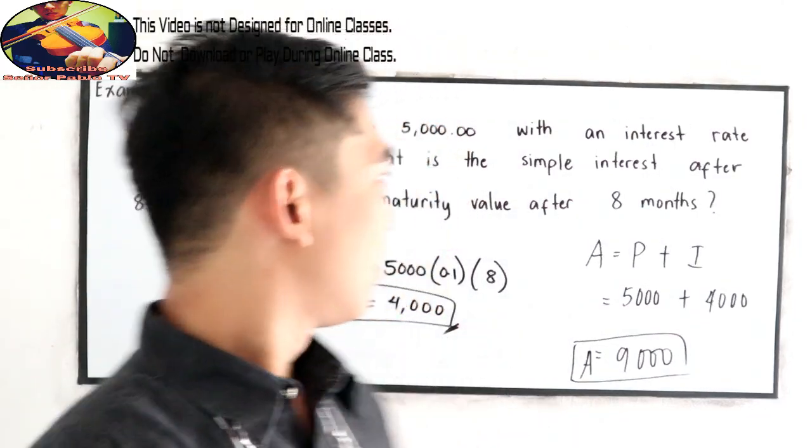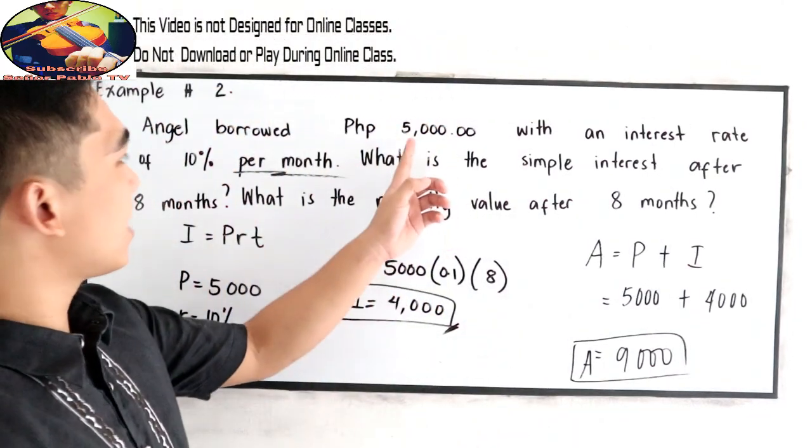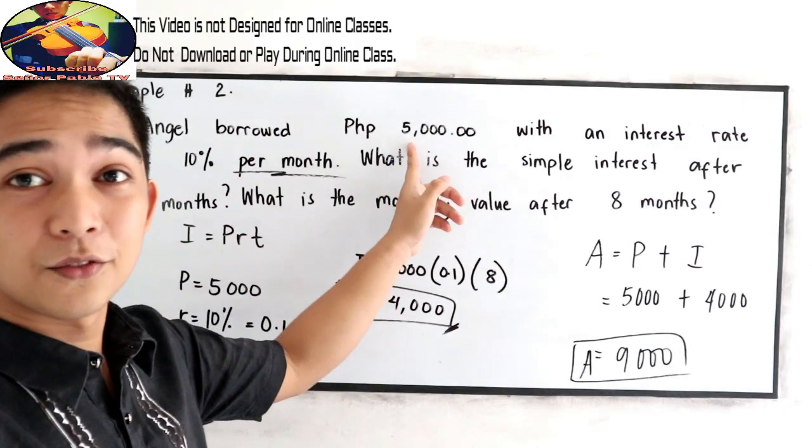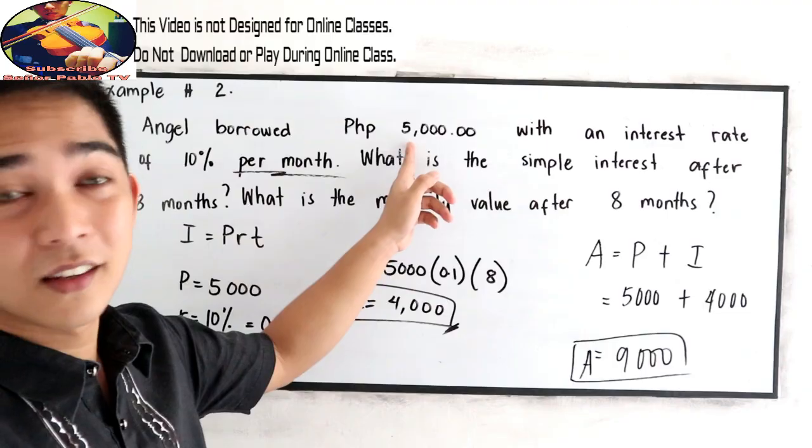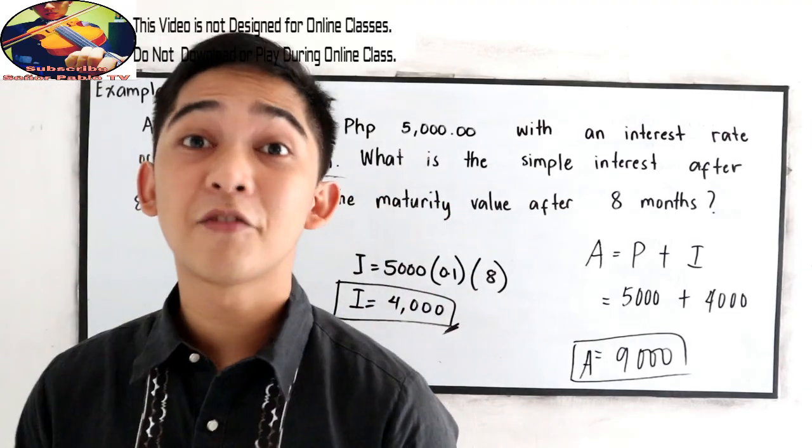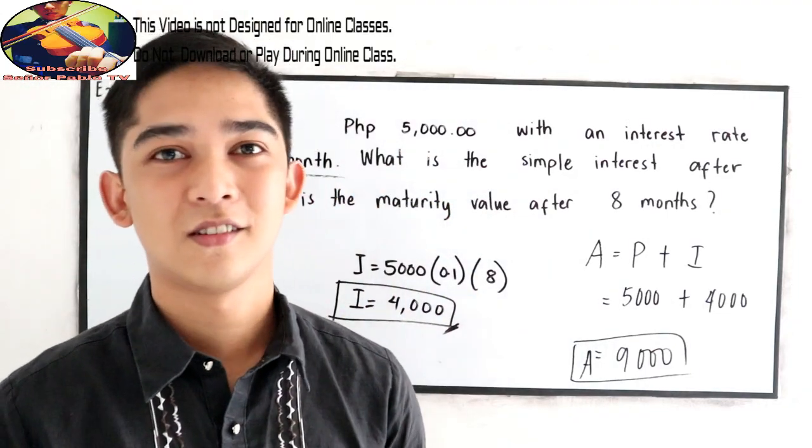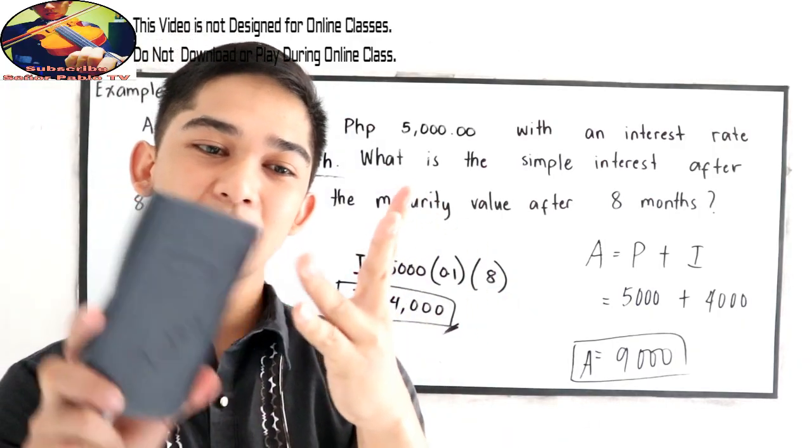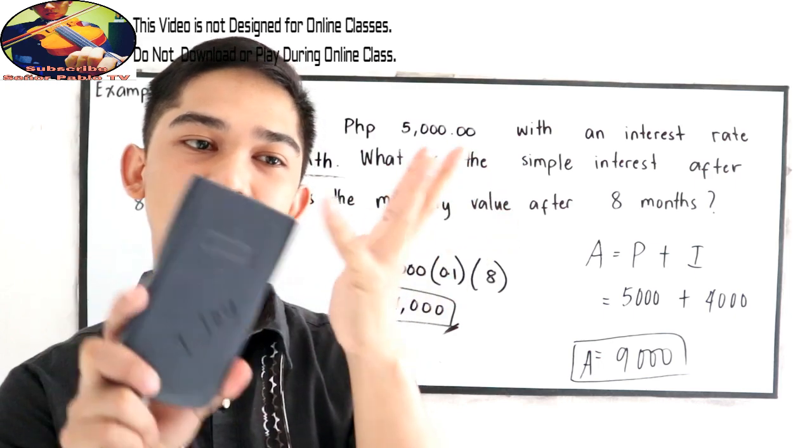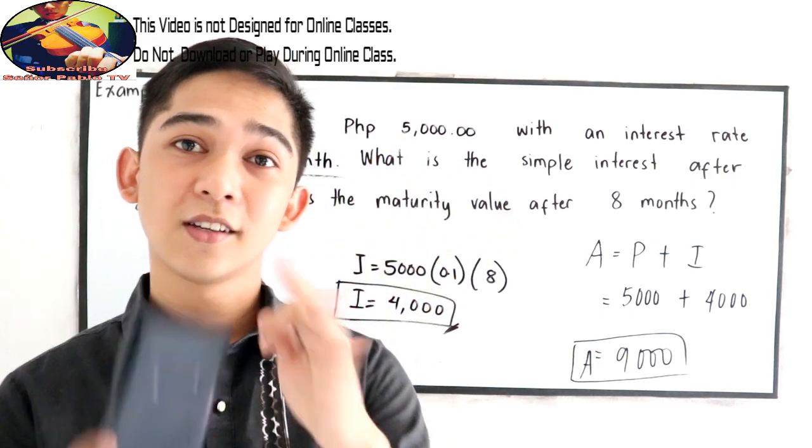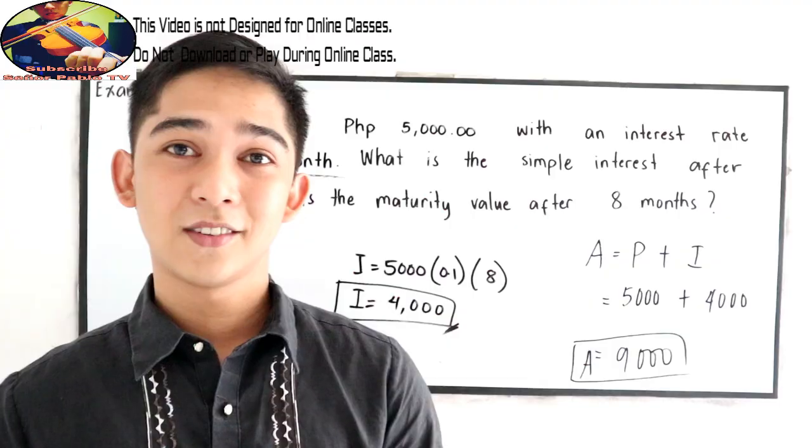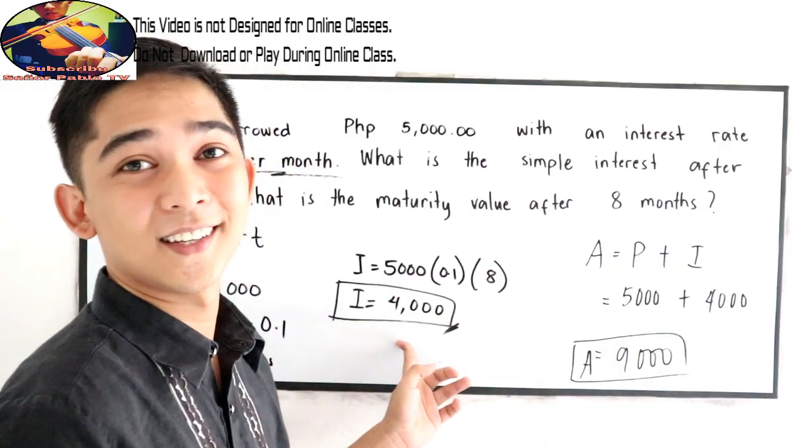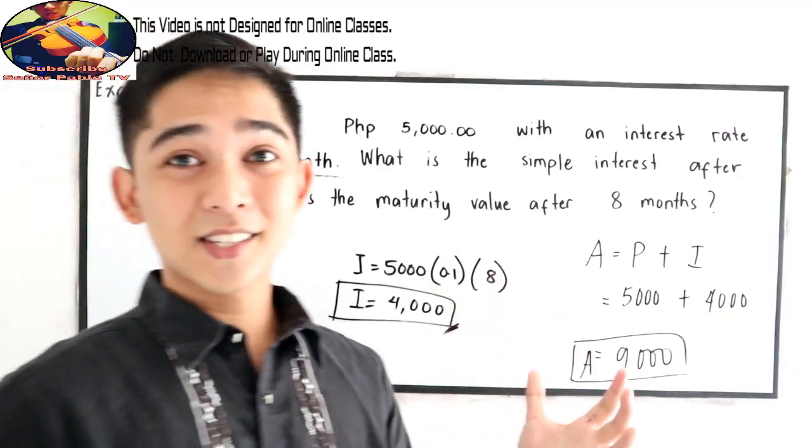So what is 10% of 5,000? That is 500. So every month, Angel will pay 500 pesos as interest. So 500 plus 500 plus 500 plus 500, 500, 500, 500, 500, 500. So 8 times 500, 4,000. So that is the simple interest.